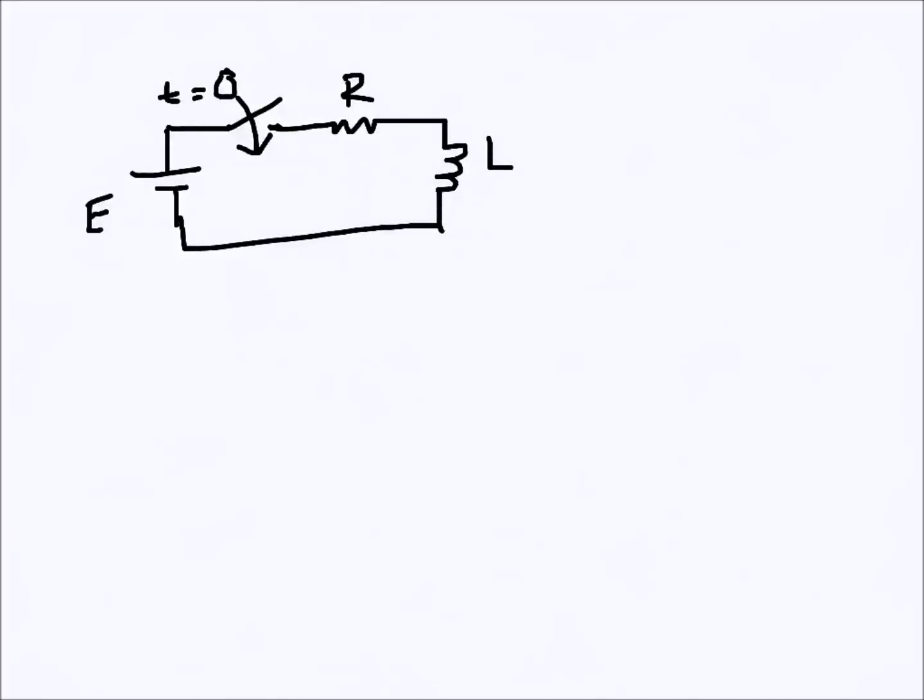In order to look at the transient current effect through an inductance, let's imagine this circuit. The switch is closed at t equals zero, and i is the current after t is greater than zero. If we write KVL here in the loop...